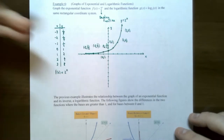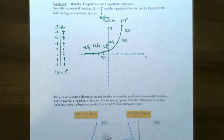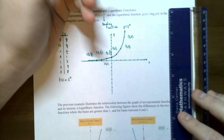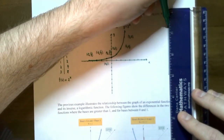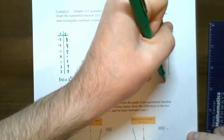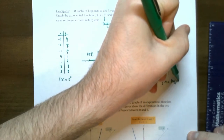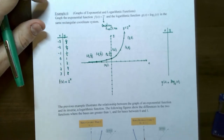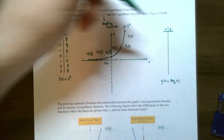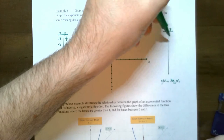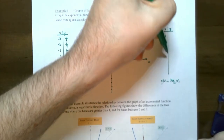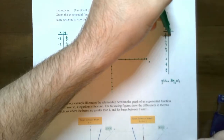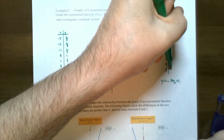Now let's make another xy table for the logarithm function — this will be for g(x) equals log base 2 of x. Notice from our earlier discussion that all the x-values for the exponential function become the y-values for the logarithm function, and all the y-values for the exponential function become the x-values for logs. So 1/8, 1/4, 1/2, 1, 2, 4, 8 are now the x-values for the log function, and the y-values are negative 3, negative 2, negative 1, 0, 1, 2, and 3.